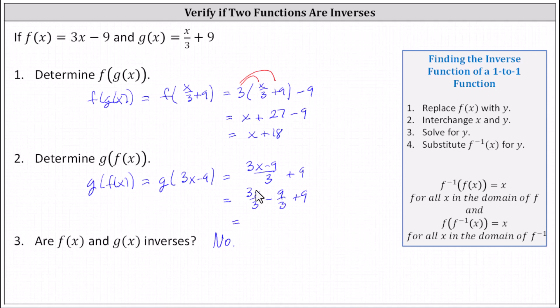Simplifying, 3 divided by 3 equals 1, leaving us with x; 9 divided by 3 is 3. So we have x minus 3 plus 9, indicating g of f of x equals x plus 6. Because neither composite function equals x, we confirm the two functions are not inverses of one another. I hope you found this helpful.